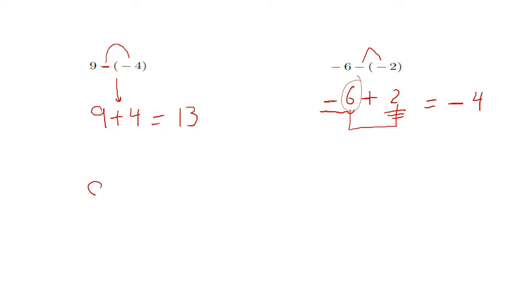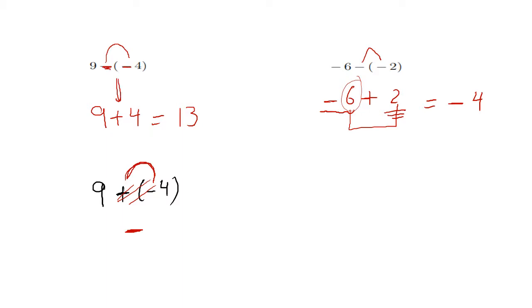Notice that if it's 9 minus or plus negative 4, you have two different signs. When you cancel away these two different signs — in the case of the same sign the result is positive, but in the case of two different signs the result is negative. So it becomes 9 minus 4, which equals 5.